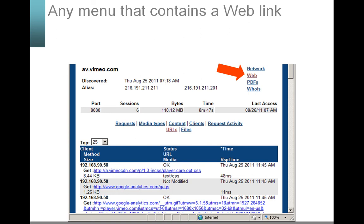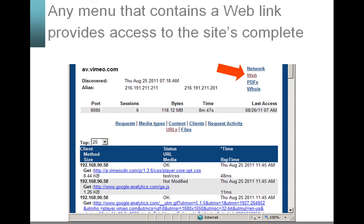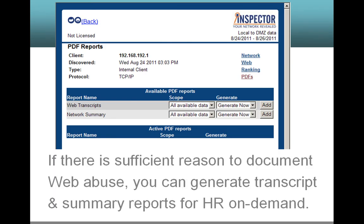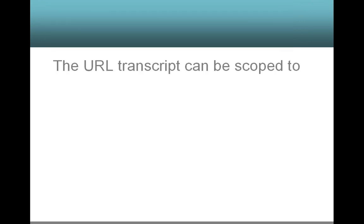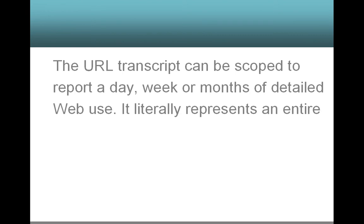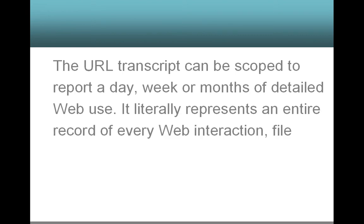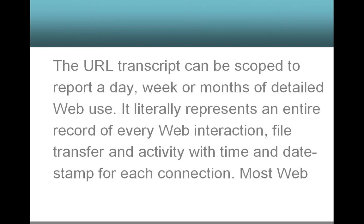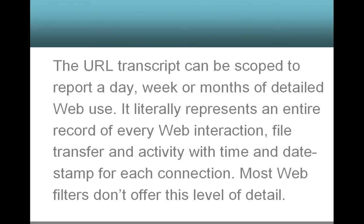Any menu that contains a web link provides access to the site's complete URL transcript. If there is sufficient reason to document web abuse, you can generate transcript and summary reports for HR on demand. The URL transcript can be scoped to report a day, week, or months of detailed web use. It literally represents an entire record of every web interaction, file transfer, and activity with a time and date stamp for each connection. Most web filters don't offer this level of detail.